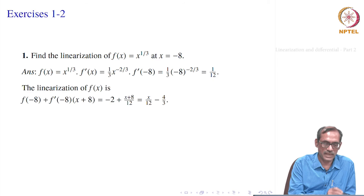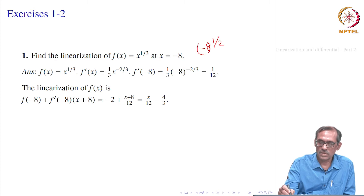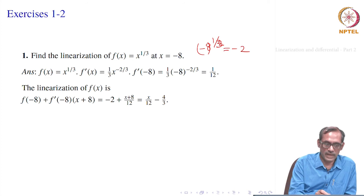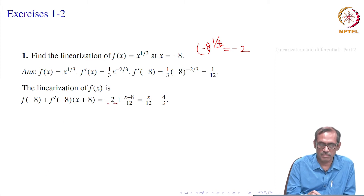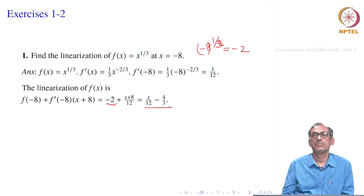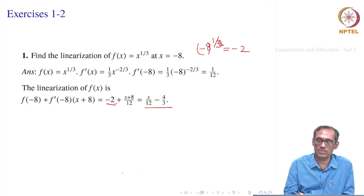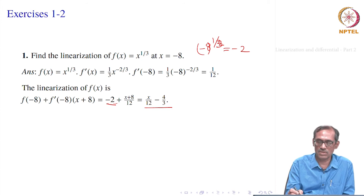And f of minus 8 is minus 8 to the power 1/3, which is minus 2. So the linearization L of x equals f of a plus f prime of a times x minus a, with a equal to minus 8. Simplifying: minus 2 plus 1/12 times x plus 8, which gives L of x equal to x/12 minus 4/3. So near x equal to minus 8, we can approximate the function x to the power 1/3 by the linear expression x/12 minus 4/3.